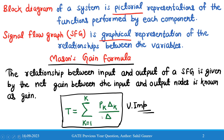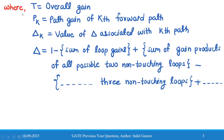In Mason's gain formula: T is the overall gain or transfer function of the system; P_k is the path gain of the k-th forward path; delta_k is the value of delta associated with the k-th path, taking only the gain values not touching the k-th forward path. Delta is defined as: 1 minus the sum of loop gains, plus the sum of gain products of all possible two non-touching loops, minus the sum of gain products of all possible three non-touching loops, and so on.